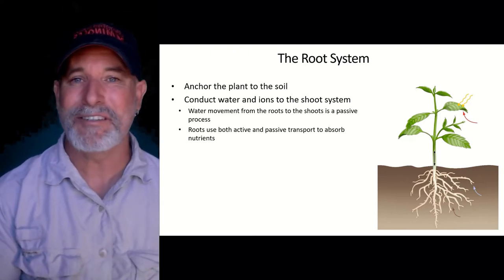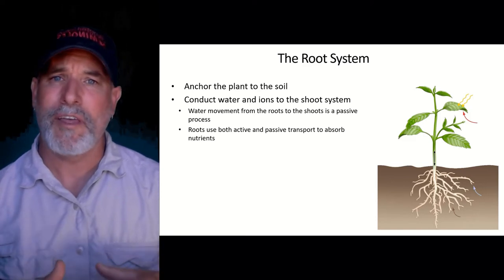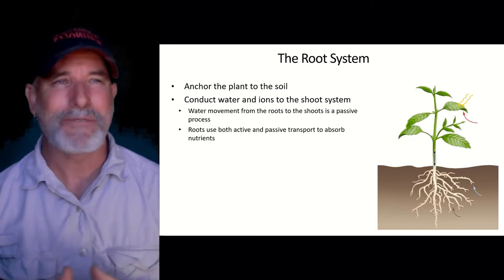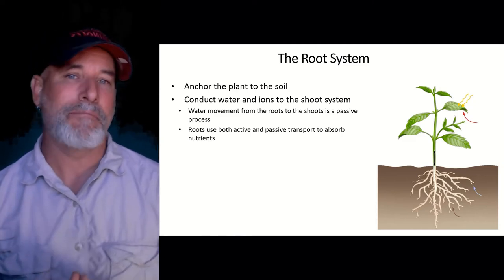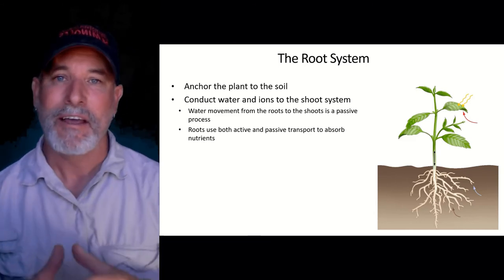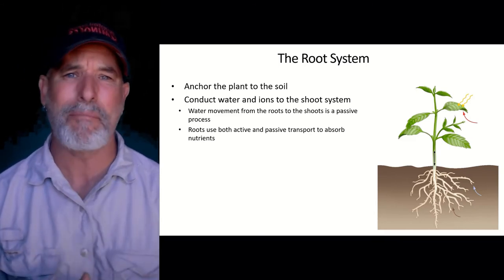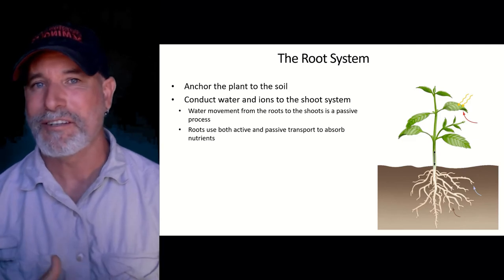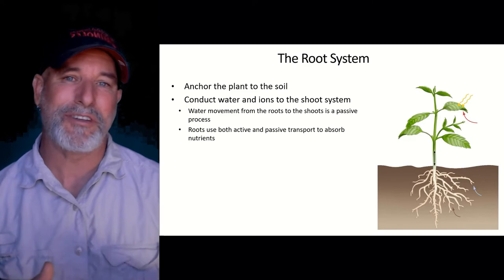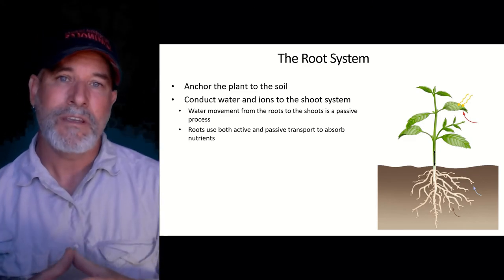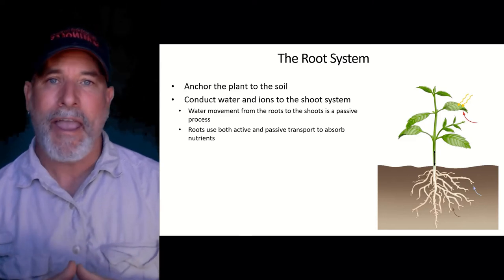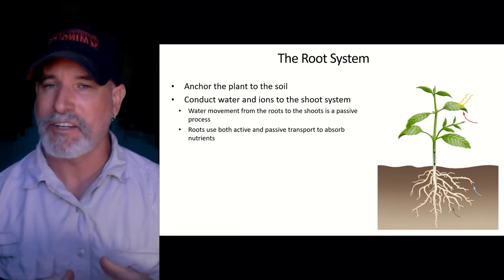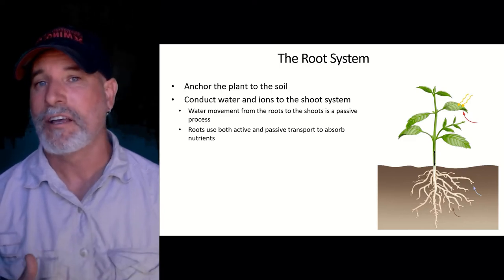Roots are living systems and they're eukaryotes, which means they need energy as well. They get all of their energy from the leaves. The vascular system transports secondary metabolites — anything a plant makes after a glucose molecule — down to the roots to support them with the energy they need to continue to grow. When roots absorb water and minerals, they use both passive transport and active transport. I'll go into great detail about how roots absorb nutrients in a later lecture.